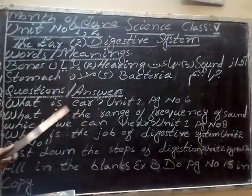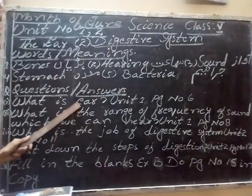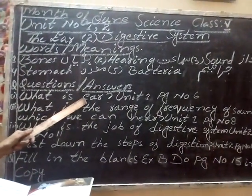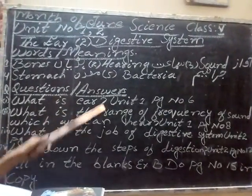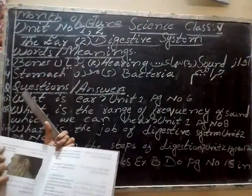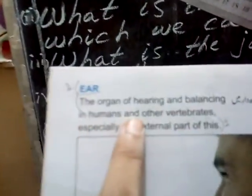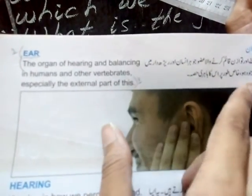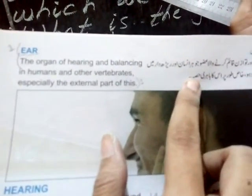Question and answer: What is air (Kaan)? Unit No. 1, page No. 6. The ear (Kaan) is the organ of hearing and balancing in humans and other vertebrates, especially the external part of this. Sunne aur tabazan karne wala adu, jo har insaan aur radiadar wain mojudud ho, khas torpah uska bhaheri hissa.